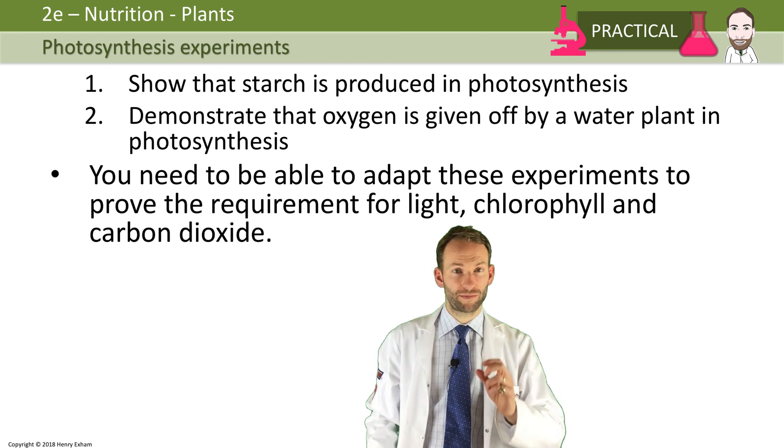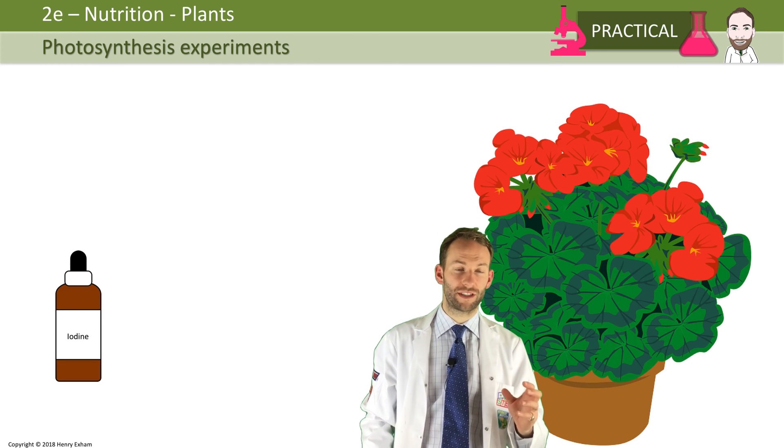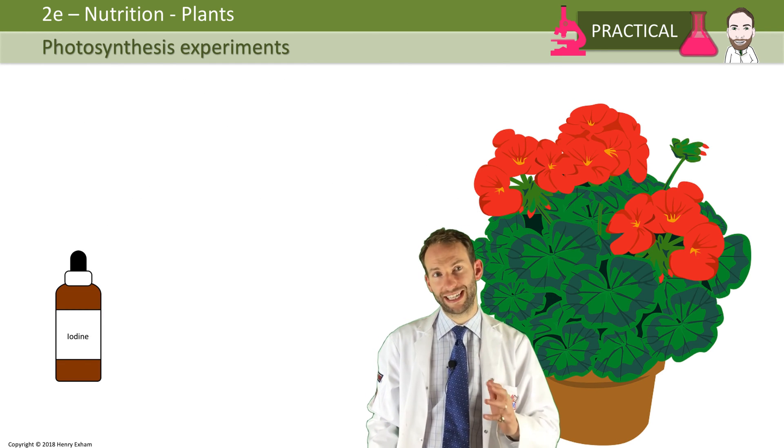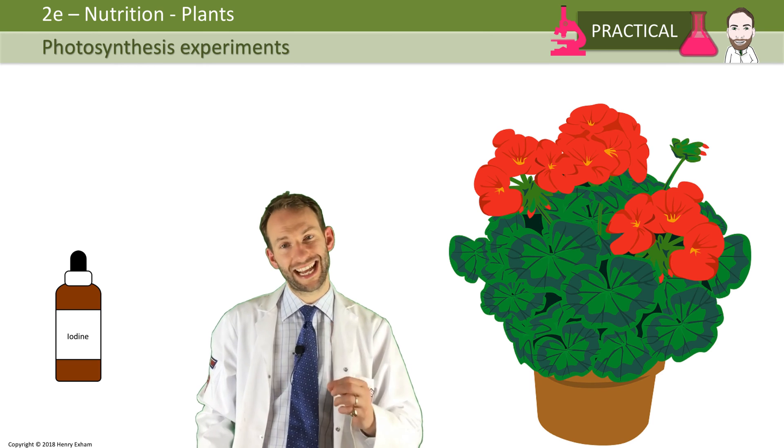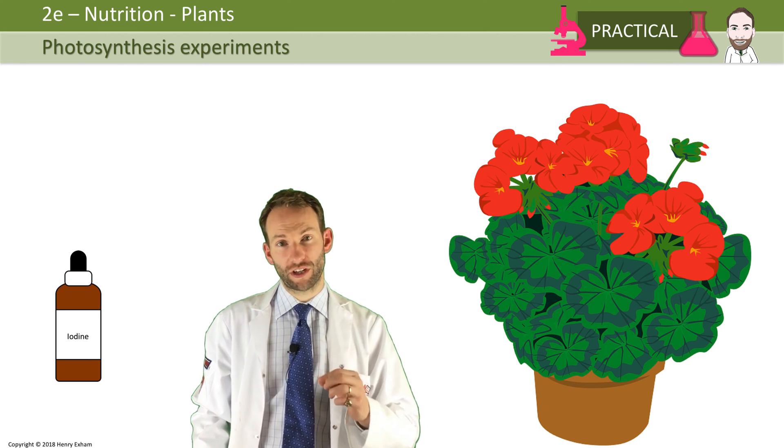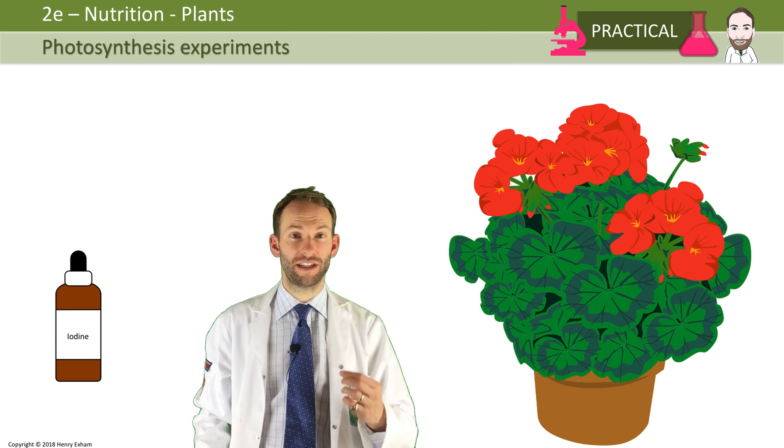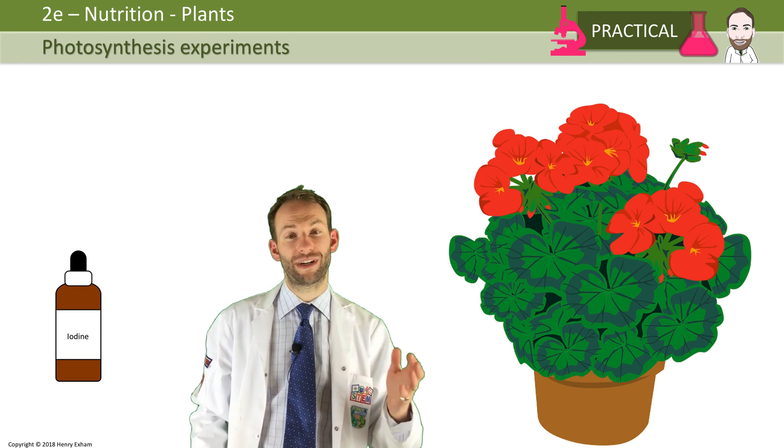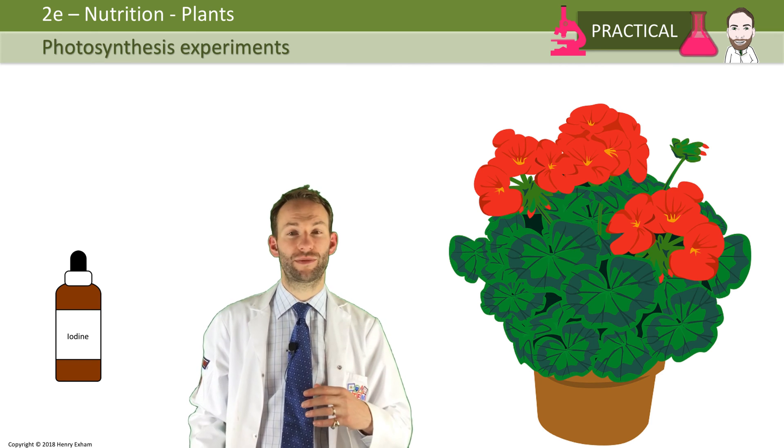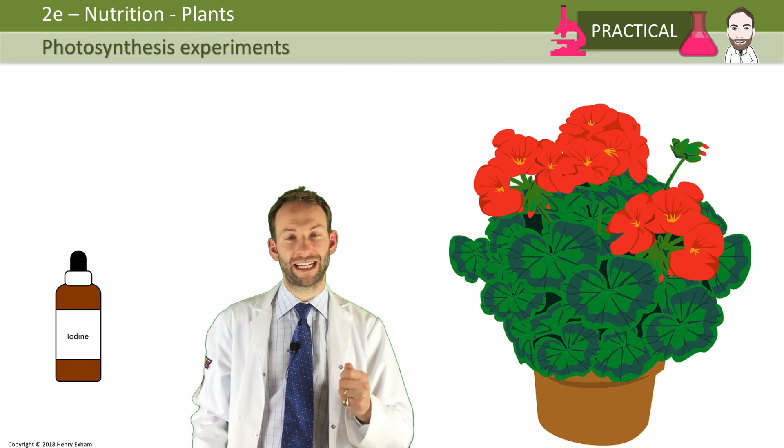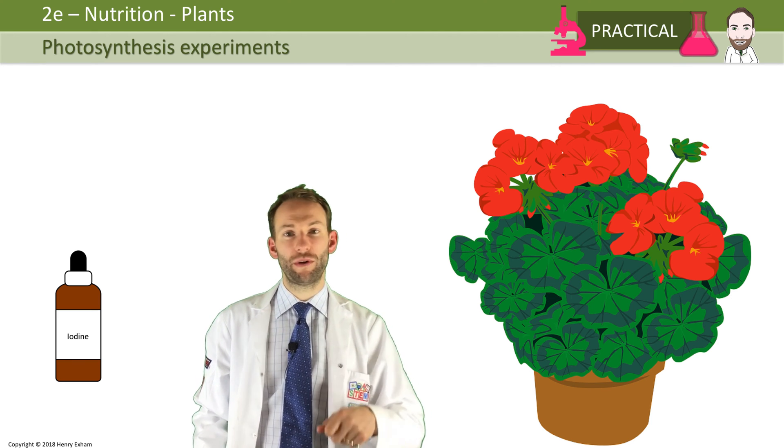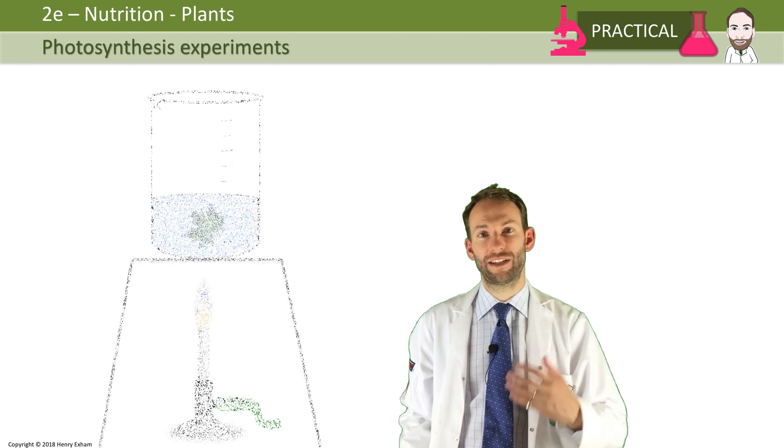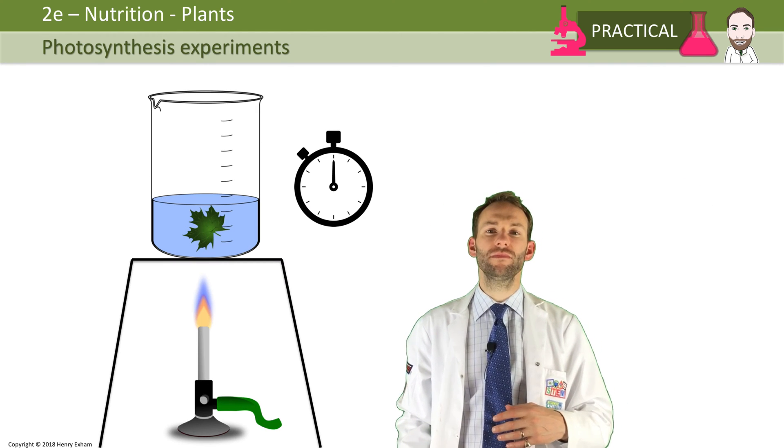Plants make glucose during photosynthesis and they can store it in their cells as starch. You can test a leaf for starch and prove the starch is there using iodine. Iodine is a chemical which turns color - it goes from yellow brown to blue black if starch is present. What you're going to do is take a leaf from a plant and boil it in some water for about 30 seconds, and that kills the leaf.